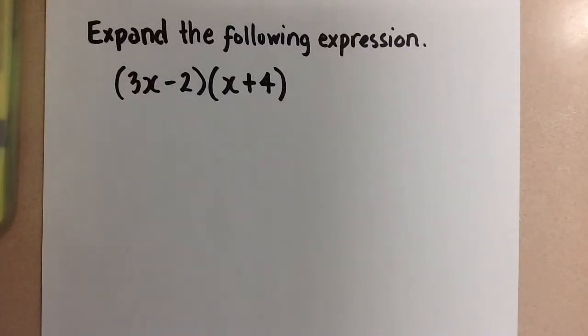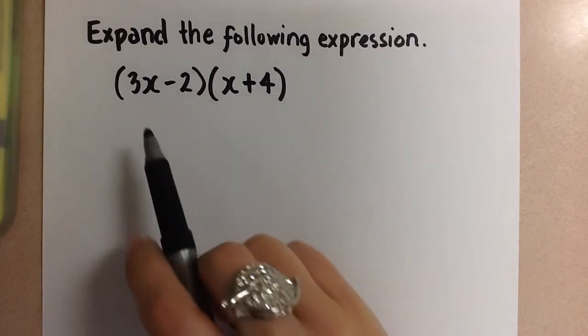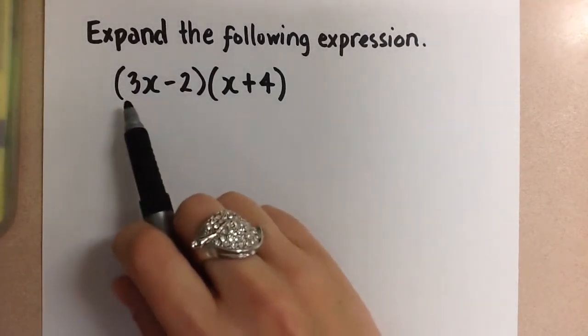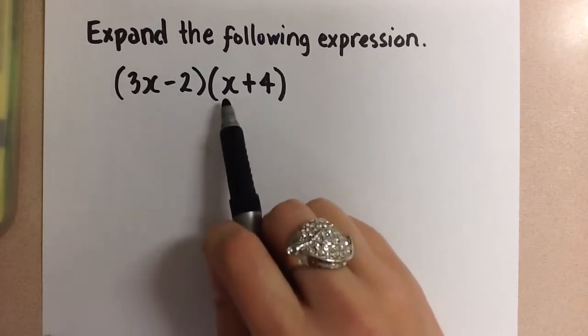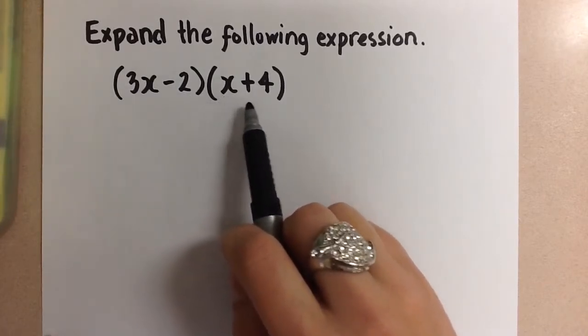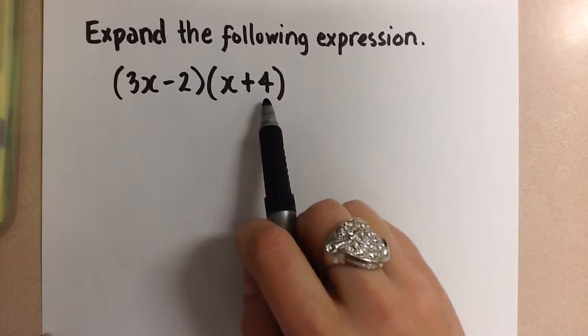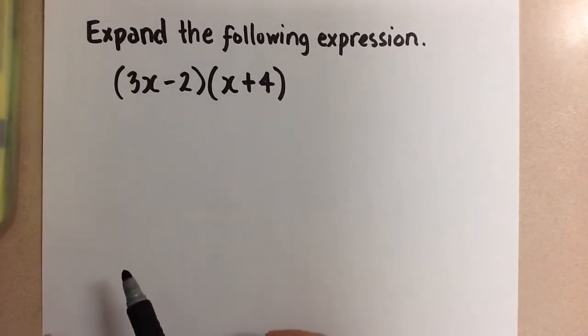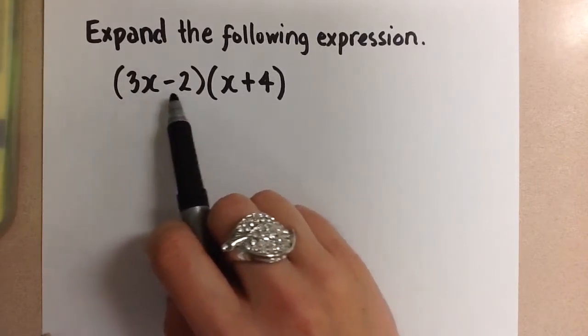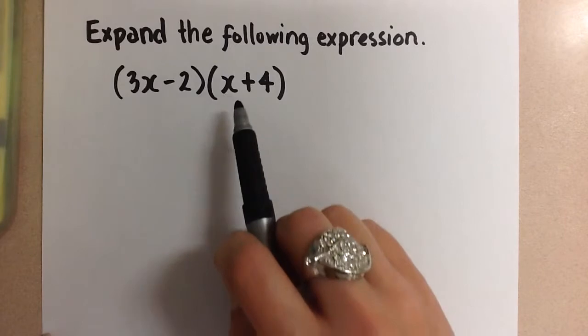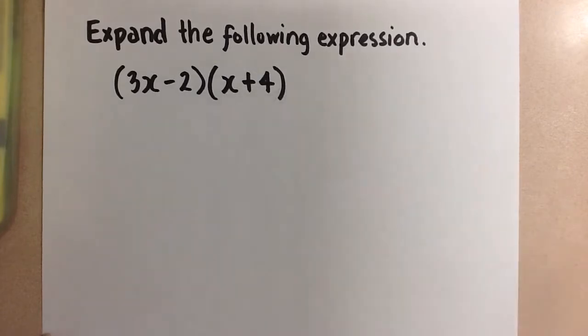Hi guys, Mrs. A here. We're going to multiply these binomials together. So we have a binomial, which is a two-term polynomial, multiplied with another binomial, which is a two-term polynomial, and we're going to expand this by multiplying. So we have to use the distributive property, which says that we have to multiply both terms in this set of brackets with both terms in this set of brackets.